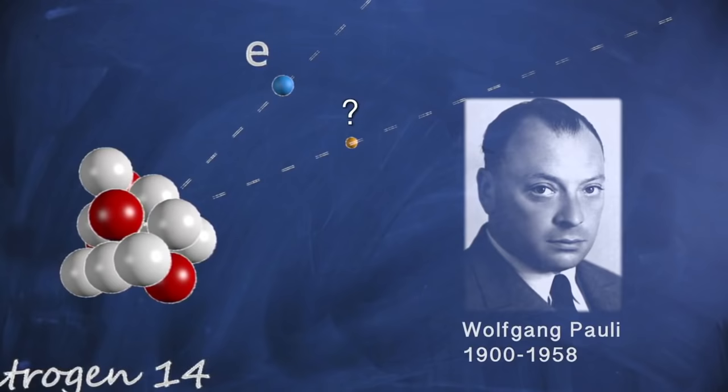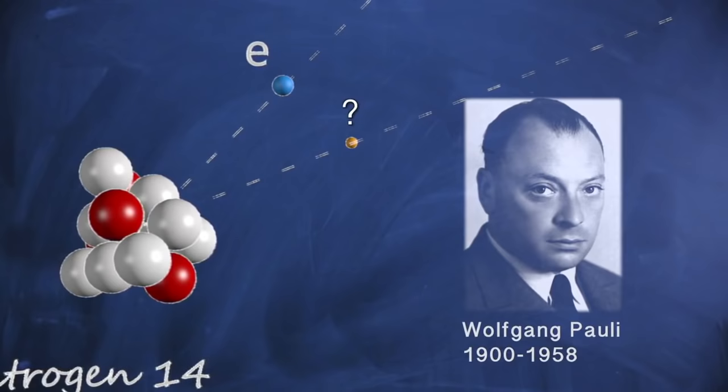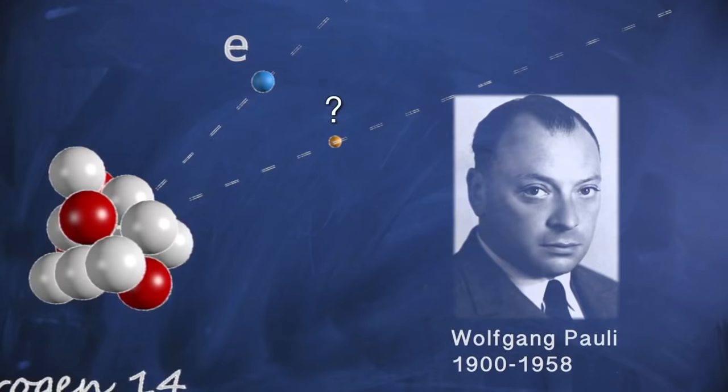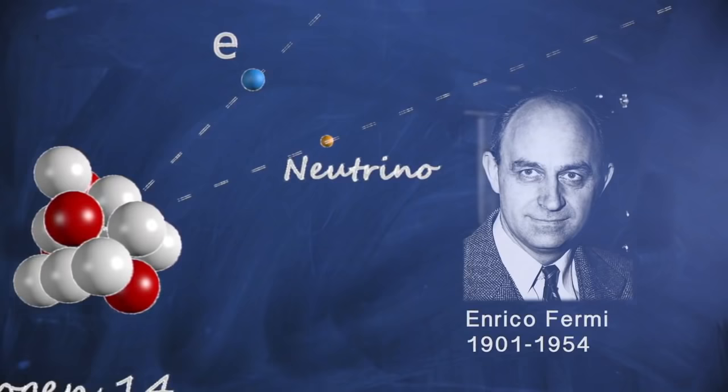Postulating a particle with little evidence for existence caused Pauli some worry. He said, I've done a terrible thing. I've postulated a particle that cannot be detected. This particle was later dubbed neutrino, or little neutral one, by Enrico Fermi in his theory of beta decay.